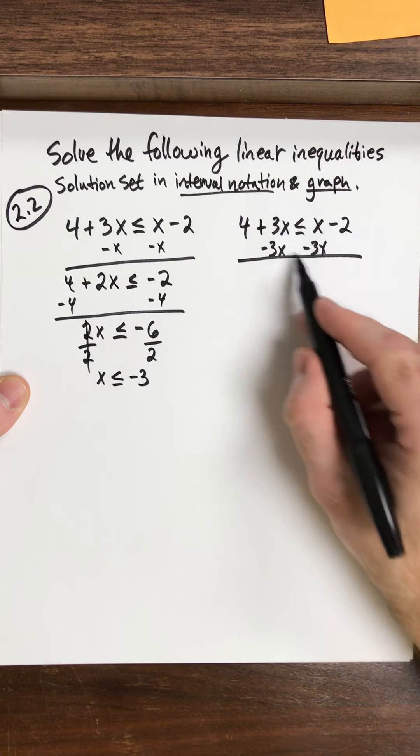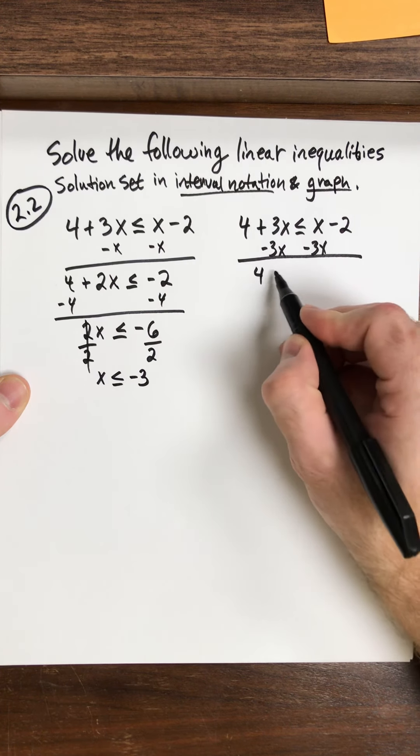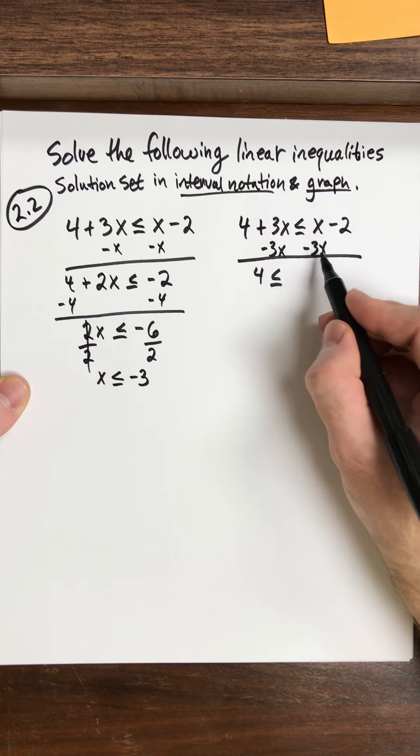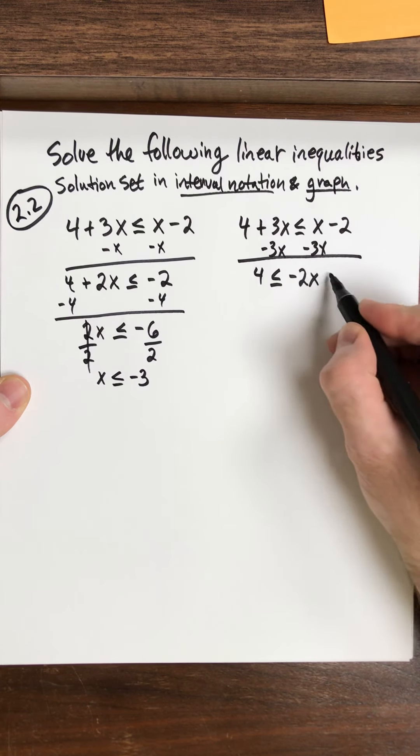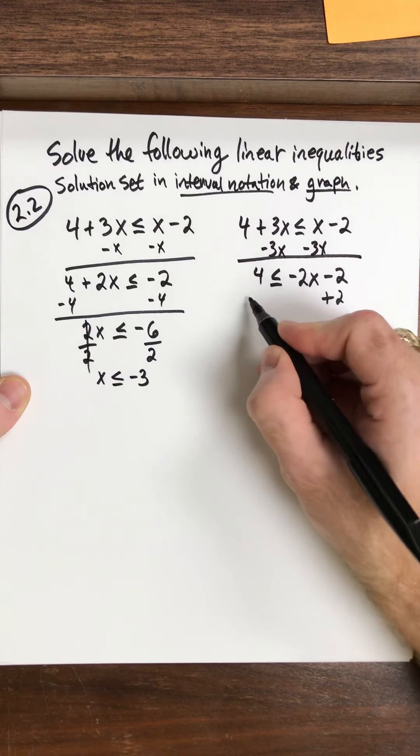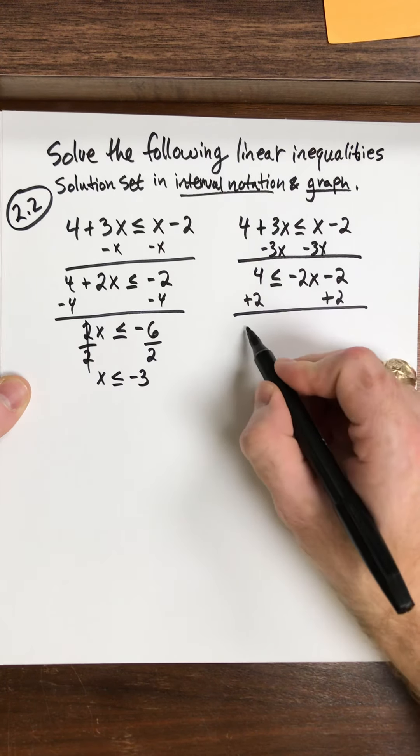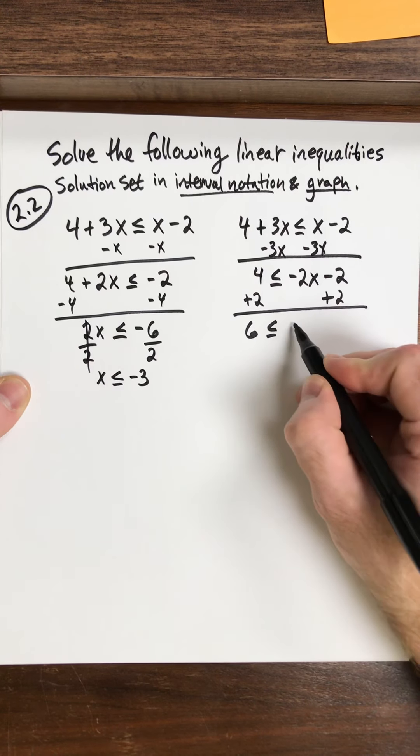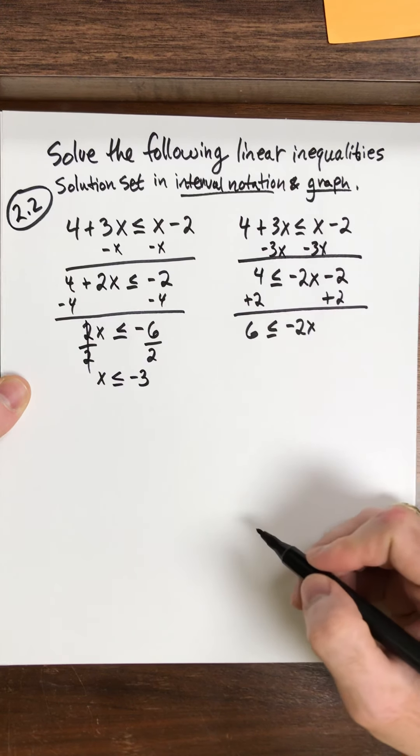Okay, now when I do this I get 4 is less than or equal to, now x take away 3x is negative 2x and minus 2. All right, here I would add 2, add 2, and so I have 6 less than or equal to negative 2x.